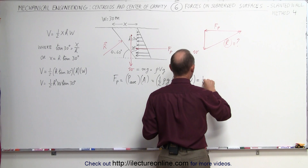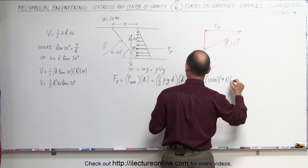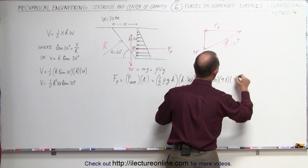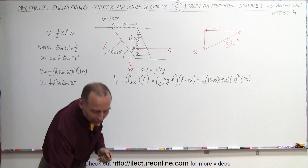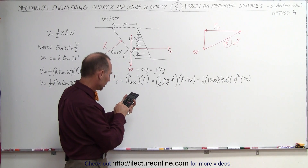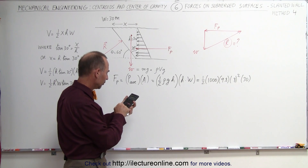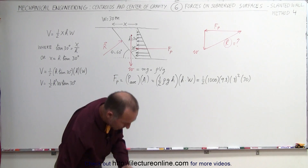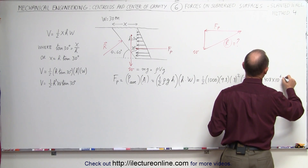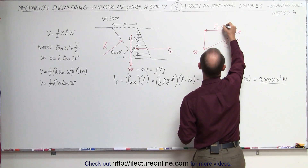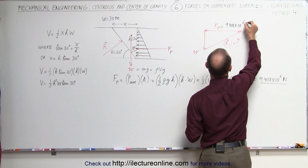Plugging in the numbers we get one-half times 1000 kilograms per cubic meter, g is 9.8 meters per second squared, h squared is 8 meters squared, and the width is 30 meters. That gives us 500 times 9.8 times 64 times 30, which equals 9.408 times 10 to the sixth newtons. So that is the magnitude of the force caused by the pressure of the water: 9.408 times 10 to the sixth newtons.